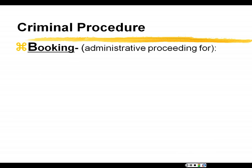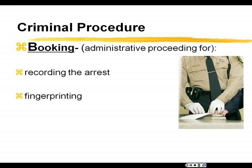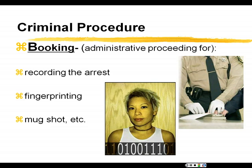B is booking. Booking used to involve a really thick, gigantic book in the police station where the defendant's arrest was recorded — fingerprinting and photographing the defendant and entering it all in that book, which is why they called it booking. Now it's all done electronically: fingerprints, photos, and all that are entered into a database and tracked by electronic means.